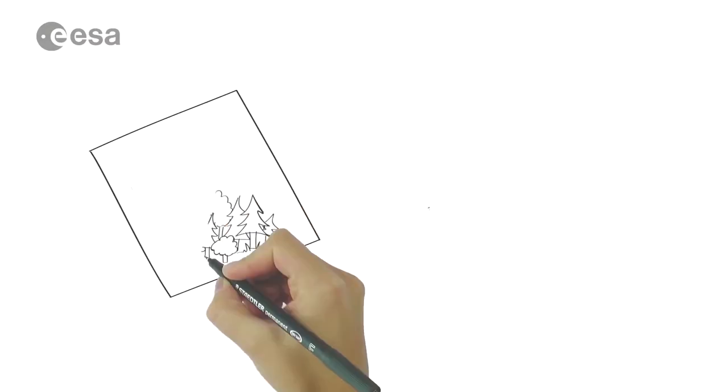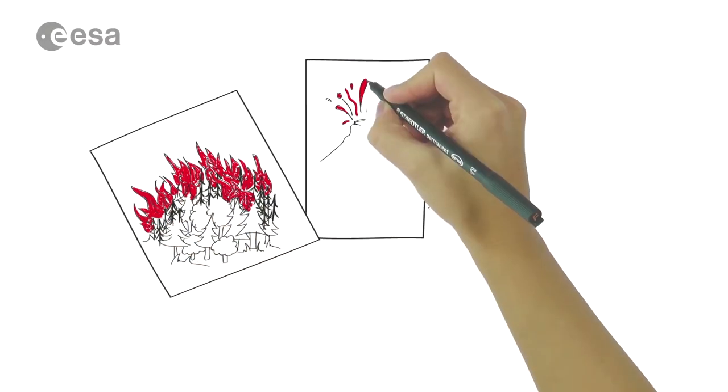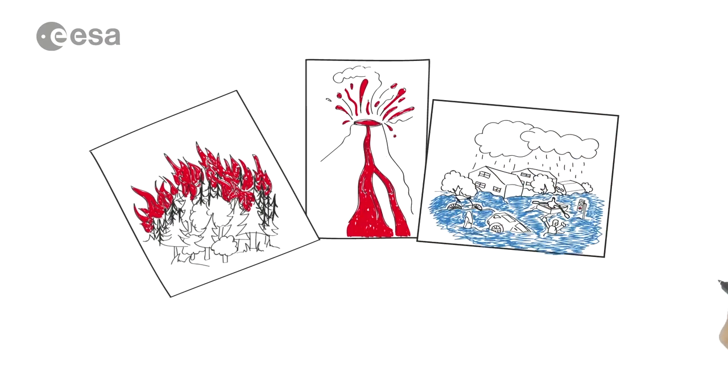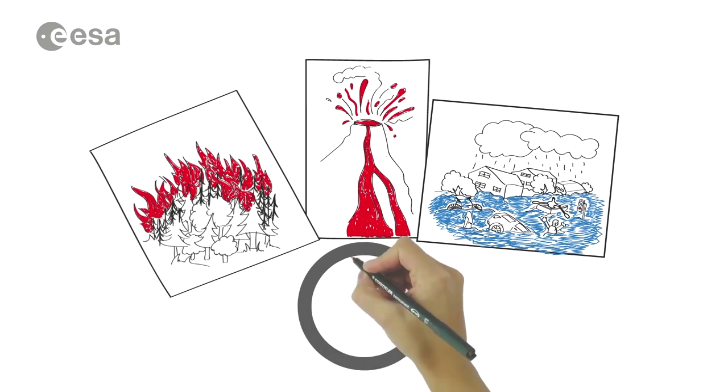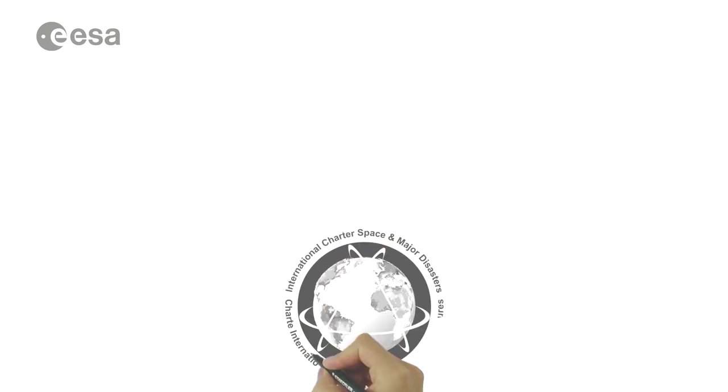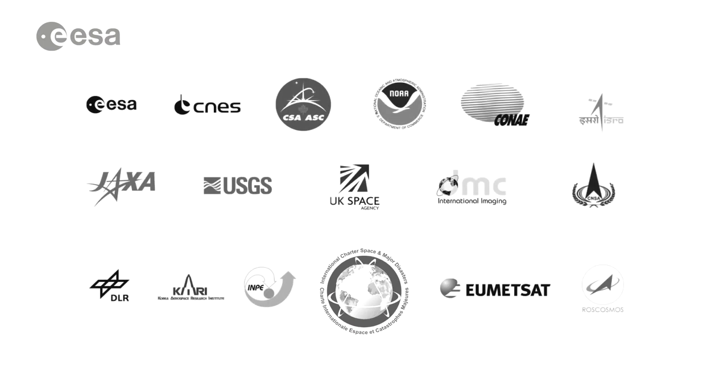We cannot prevent natural disasters from happening, but we can help to manage their consequences. Satellites provide rapid, accurate information anywhere around the world, 24 hours a day. The International Charter Space and Major Disasters is helping to save lives wherever disasters strike.